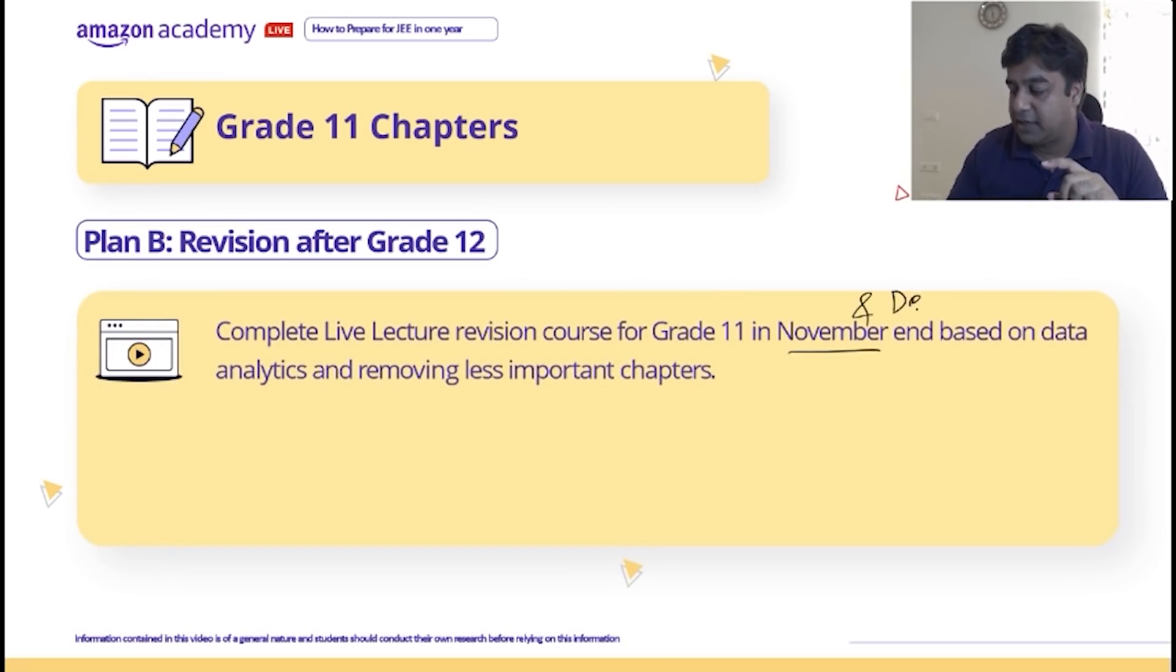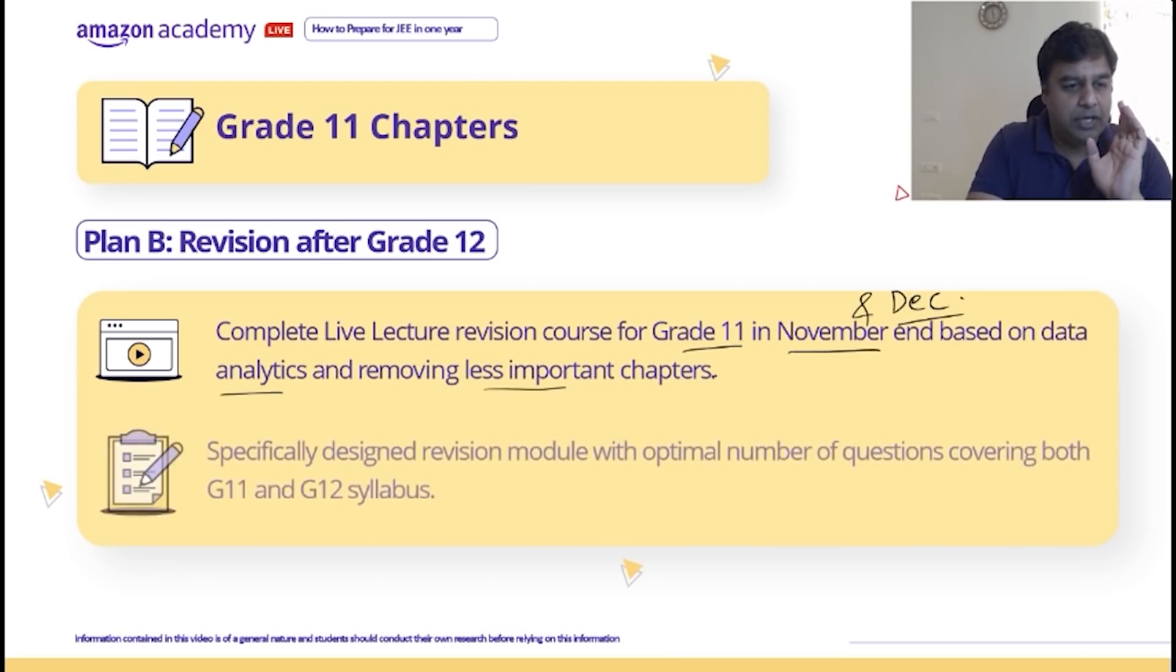Plan B - we will do in November and December, which are our Grade 11 chapters on data analytics basis. We will cover the whole revision classes. All the important chapters will be in the month of November and December once we complete Grade 12, and then Grade 11 will be covered. This is my Plan B. At that time, I am going to give you a revision module with optimal number of questions covering both Grade 11 and 12. This revision module will specifically target JEE.